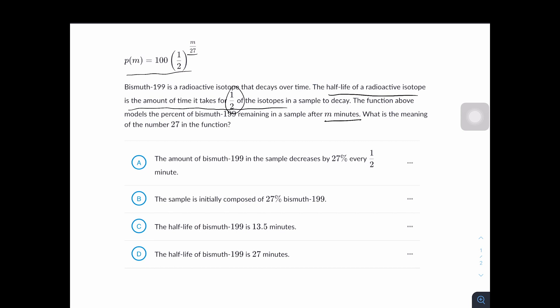So when m is equal to 27, 27 over 27 is 1, so one half to the power of 1 is one half. And one half times 100 is 50. The 100 right here represents the percent of bismuth 199 remaining in a sample. Half-life is when one half of the isotopes in a sample decay. So only when m is equal to 27 do 50 percent of the isotopes in a sample decay. And that's why answer choice D is correct.